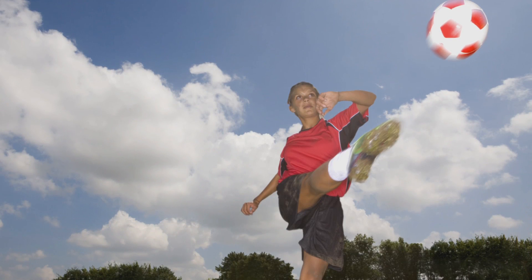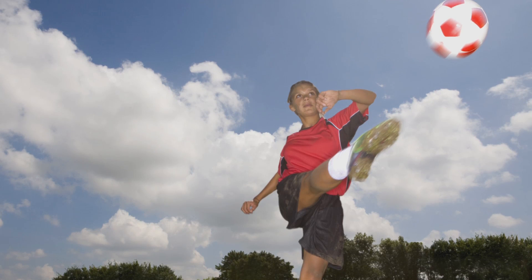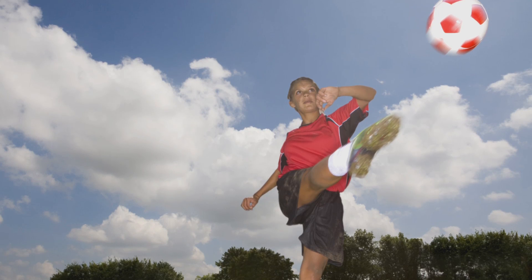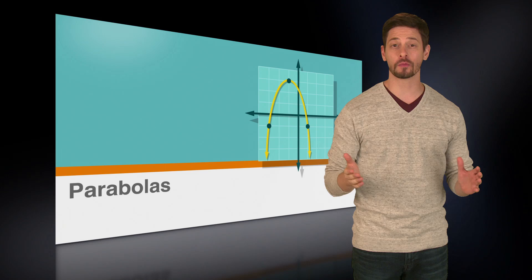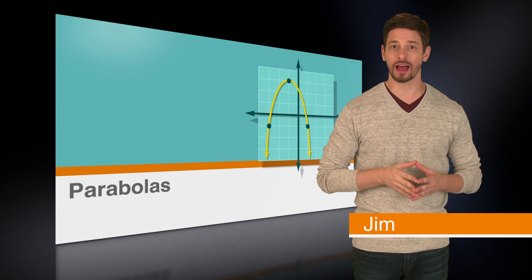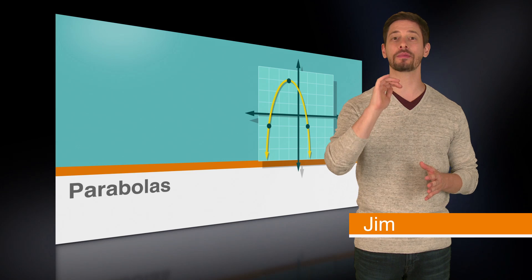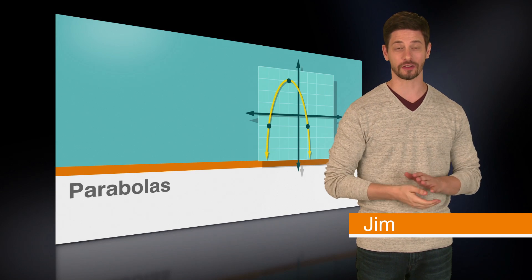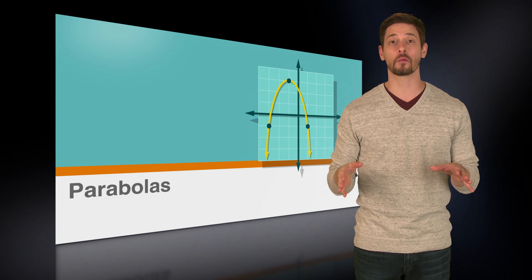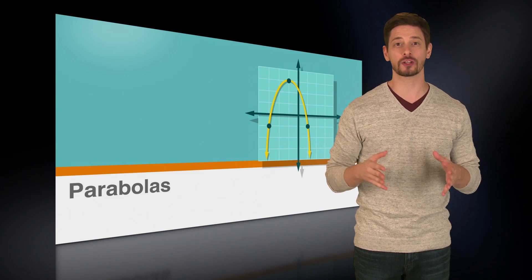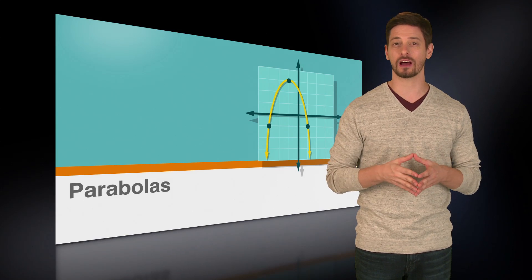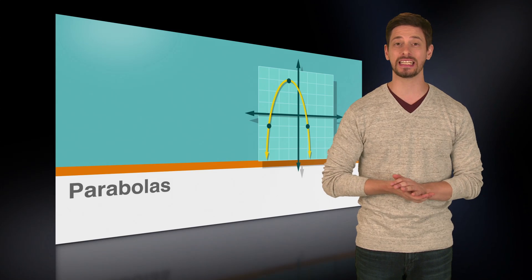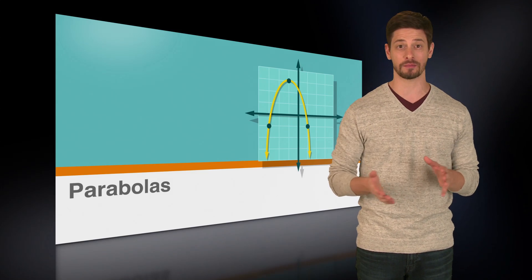Have you ever kicked a soccer ball up into the sky and watched its U-shaped path, wondering how it would look on a graph? Chances are, your ball may have made a parabola as it arced up into the air and came back down again, hopefully into the goal. In this video, we'll review the standard and vertex forms of a parabola and look at the types of ACT questions that might be asked about them.